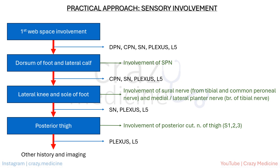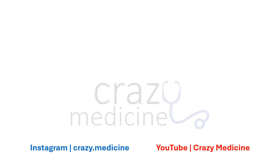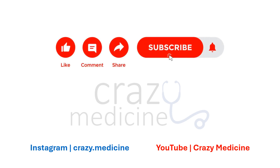Clinically, it is crucial to take a thorough history, examine both motor and sensory components together, and correlate the findings to narrow down the diagnosis. Once we have reached a clinical diagnosis or hypothesis, imaging studies, nerve conduction studies, and electromyography can be used to confirm the diagnosis. If you find our video helpful, don't forget to like, share, and subscribe to our channel for more clinical and conceptual content. Your support helps the channel grow and reach more learners and professionals like you.